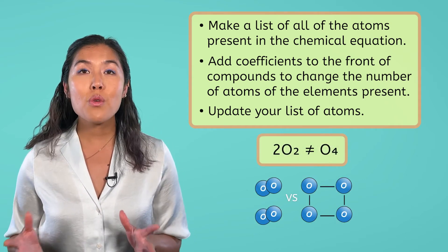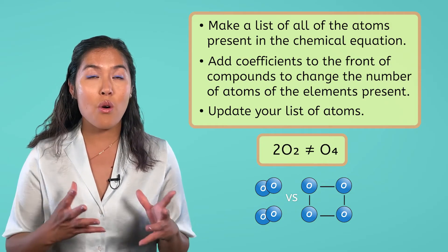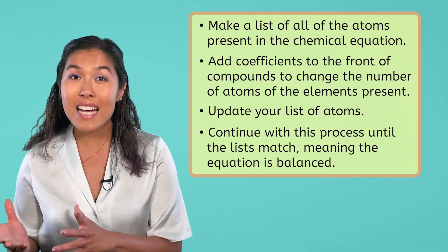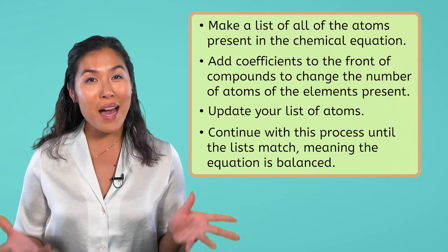For example, 2O2 means two oxygen molecules, while O4 is not a molecule. Once your reactants list matches your products list, your equation is balanced.